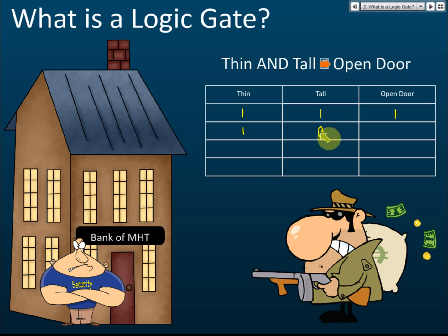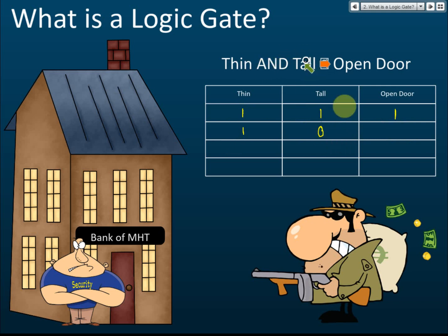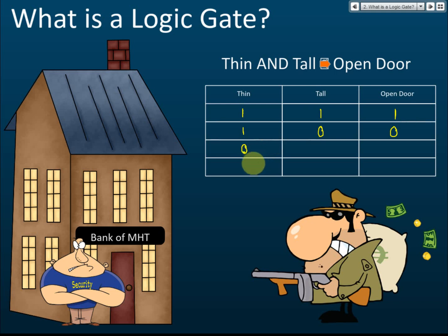The instruction is thin AND tall, but the second customer is thin and not tall, so the answer is no — the security guard does not open the door, represented as zero. Another customer comes — he is fat but tall. Should the security guard open the door? No.